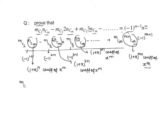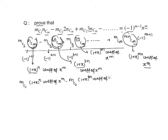So the equation can be rewritten as: mC1 into 1 plus x whole power n minus mC2 into 1 plus x whole power 2n plus mC3 into 1 plus x whole power 3n minus dot dot dot, and in each expansion we take the coefficient of x power m.